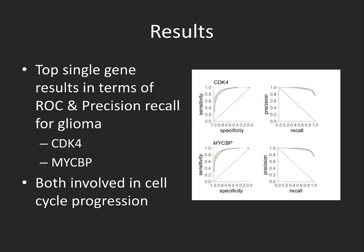Here are two genes I wanted to highlight — they are at the top of the list in terms of AUC and precision-recall. Not surprisingly, both of these genes are involved in cell cycle progression, since we expect to see cell cycle progression reflected in the histopathology image.